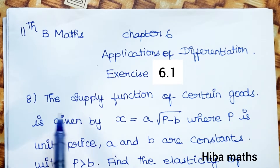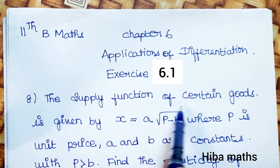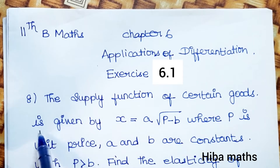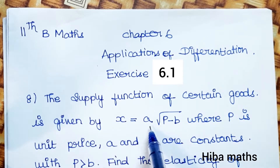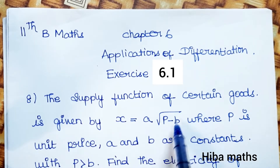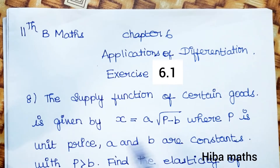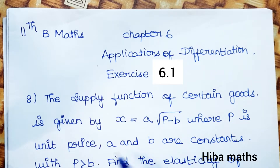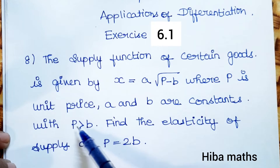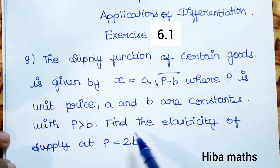If we solve it, the supply function of certain goods is given by x is equal to a root of p minus b, where p is unit price, a and b are constants, with p greater than b.